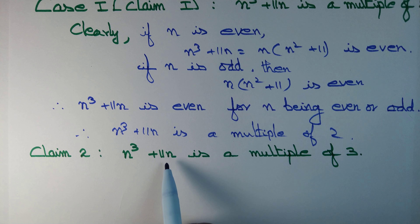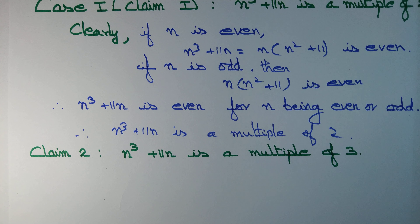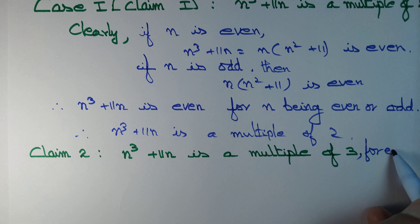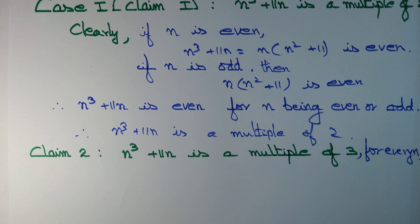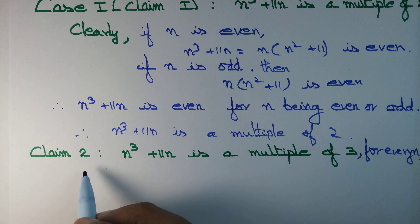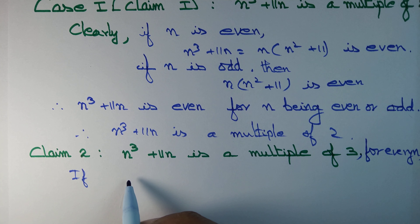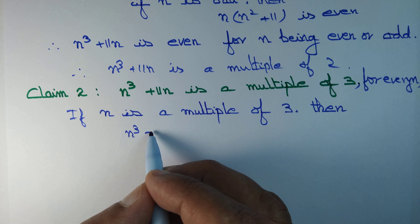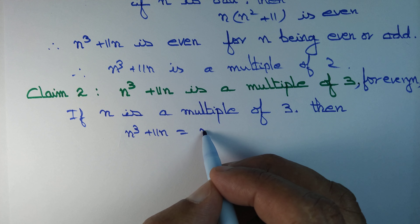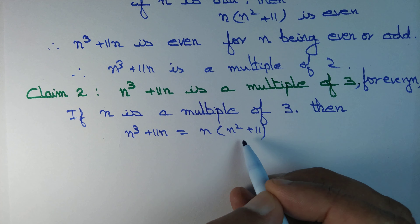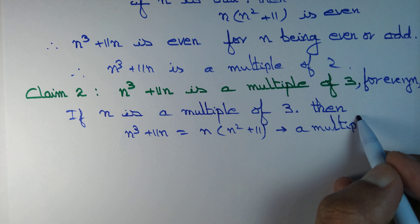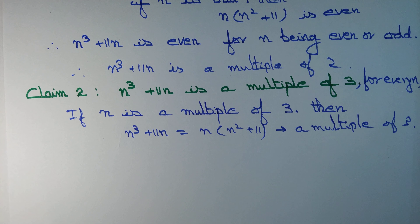Claim 2: n³ + 11n is a multiple of 3 for every n. If n is a multiple of 3, then n³ + 11n = n(n² + 11) is definitely a multiple of 3, since n itself is divisible by 3. What if n is not a multiple of 3?